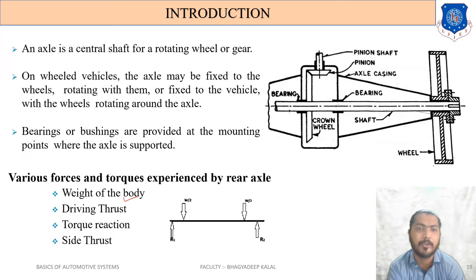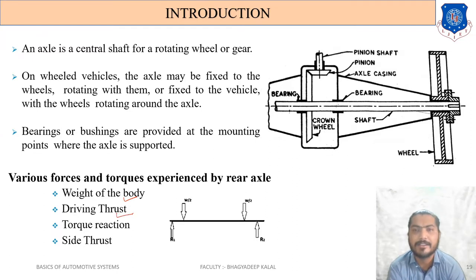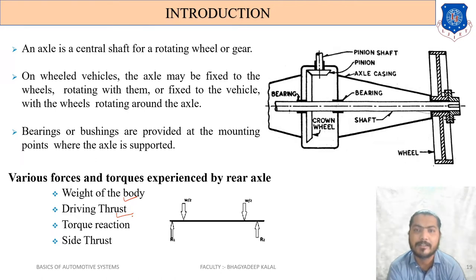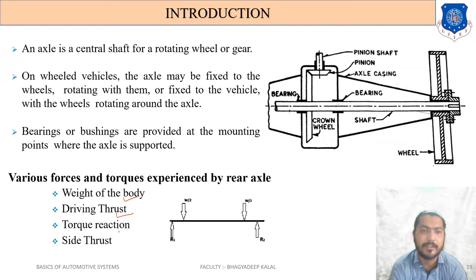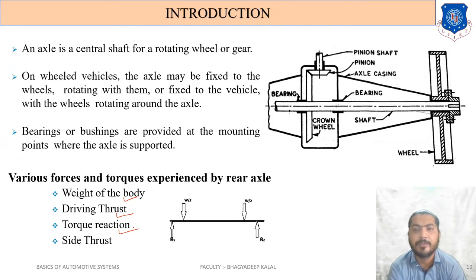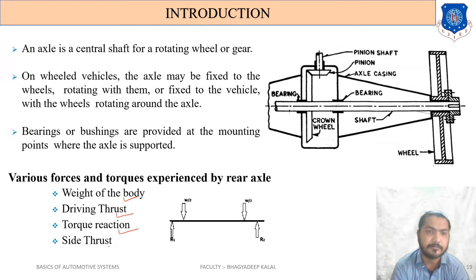Different types of loads act on the axle. First is the weight of the vehicle body, occupants, or goods. Second is driving thrust — the driving torque which comes onto that axle, and the reactive torque acting through the road wheel. Third is torque reaction, which comes from the bevel pinion; that bevel pinion torque is borne by the shaft.